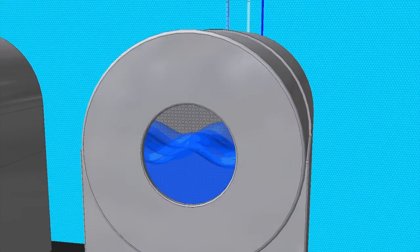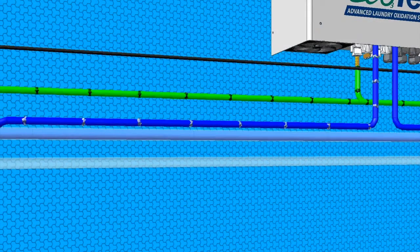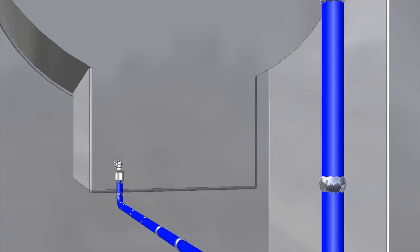Once the washer drum is filled with water, the Ecotex system opens a solenoid valve, allowing oxygen to flow to the ozone reaction chamber, where the ozone is created.